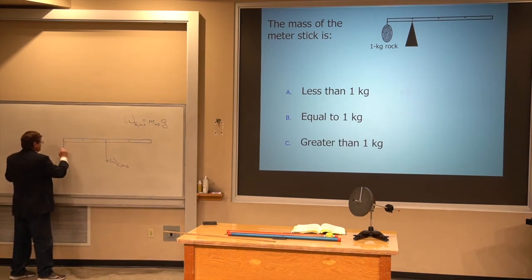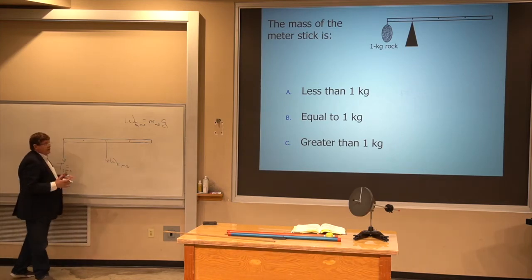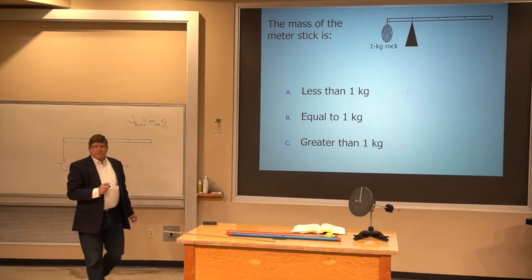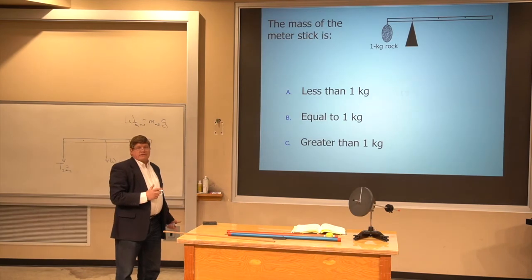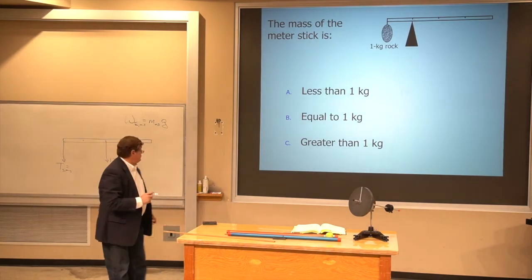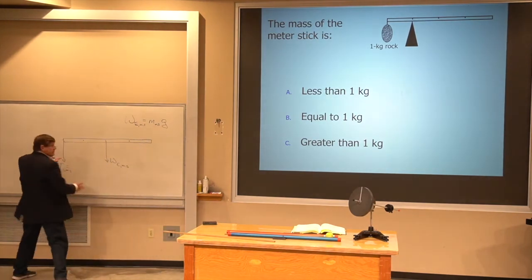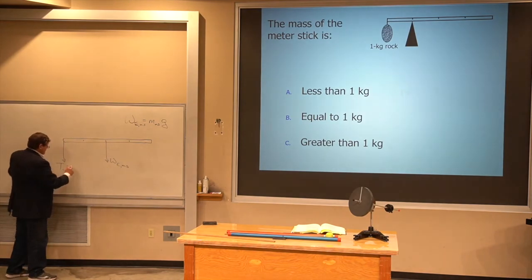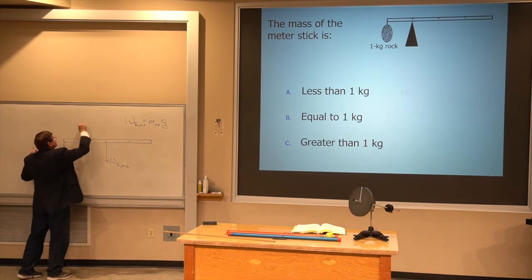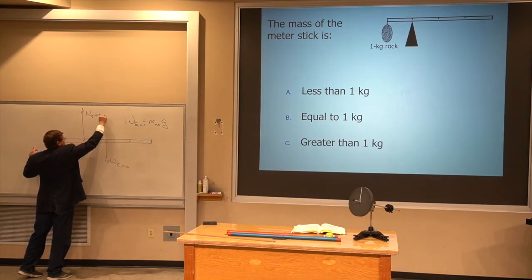So what touches the meter stick? Well, I have this string pulling, and that's the tension force, string on the meter stick. And I know, from a free body diagram for the rock, that that tension in that string has to be 10 newtons. And that's going to be the same at both ends of the string, so that's going to be 10 newtons. I then also have this force, this normal force by the pivot on the meter stick.